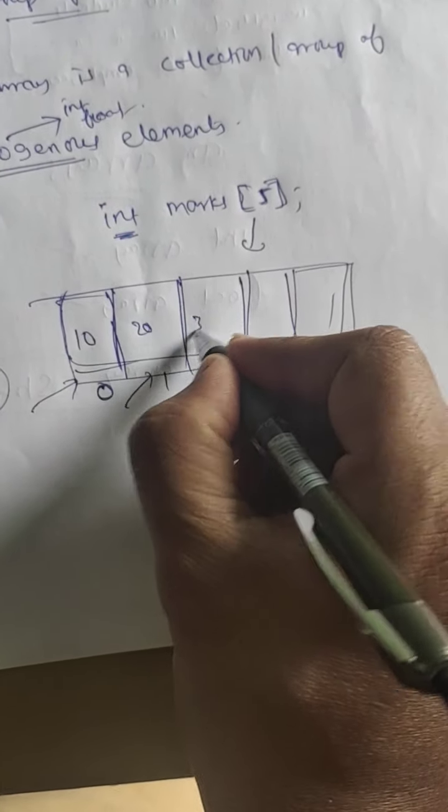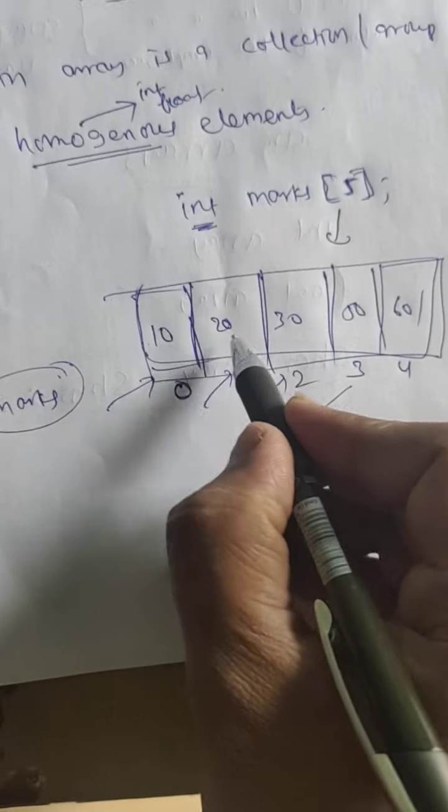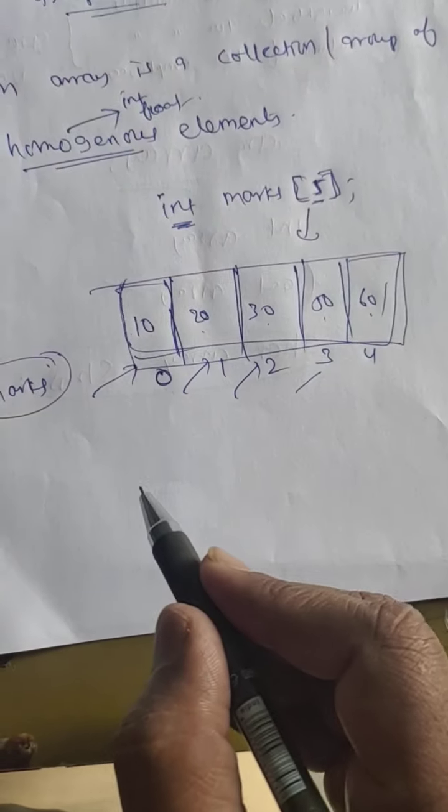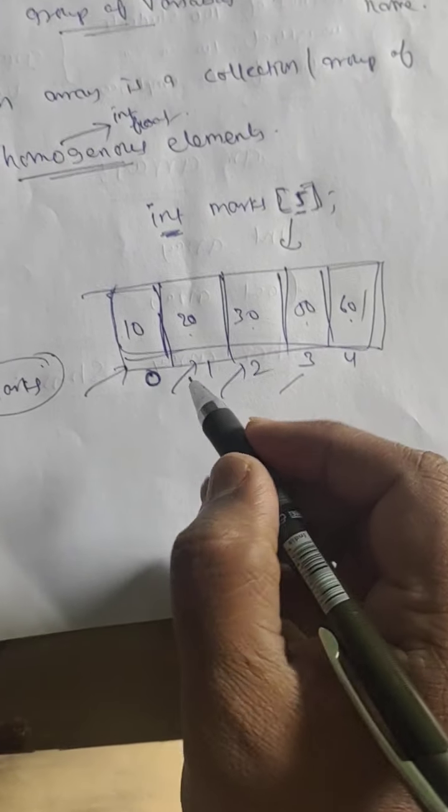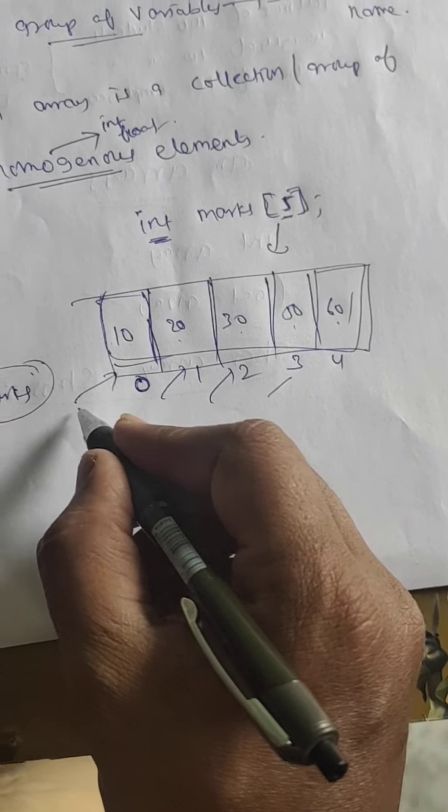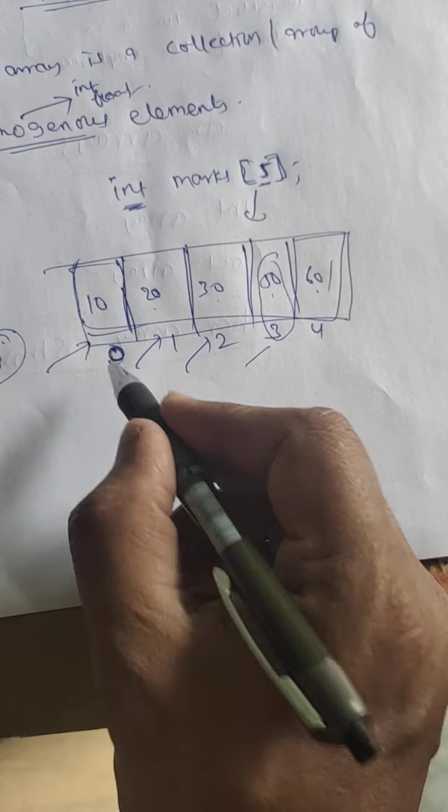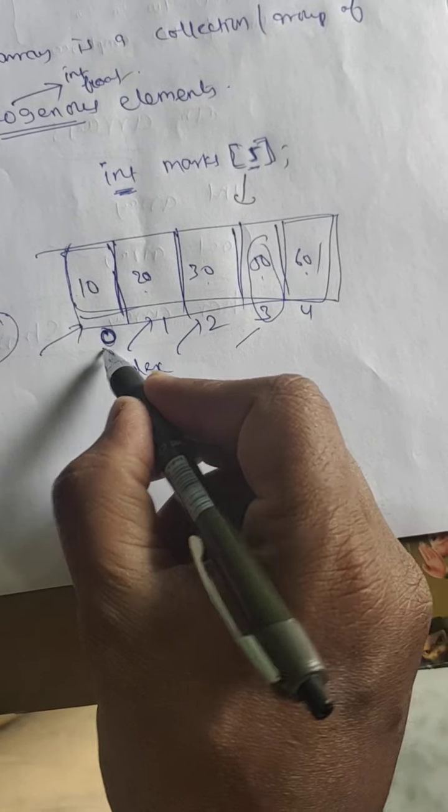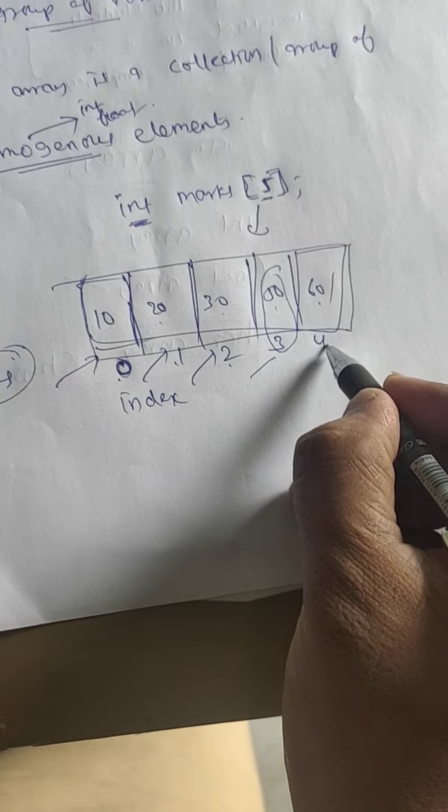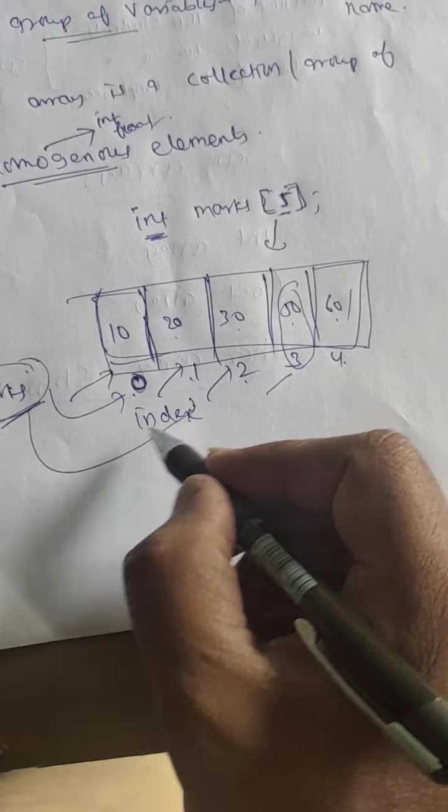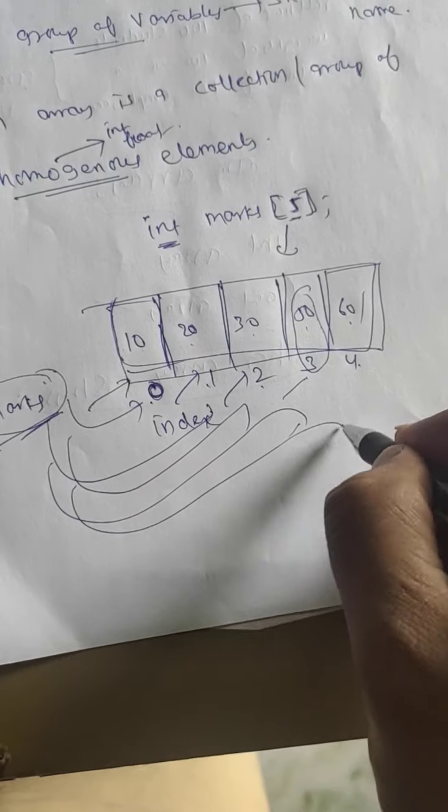So here we could store the marks, for example like this: 10, 20, 30, 50, 60. How many students' marks? This is five students' marks. To read the student marks, the index will start with zero. So the index is 0, 1, 2, 3, 4. The name is marks, so first word marks - marks of 0, marks of 1, marks of 2, marks of 3, marks of 4, like that.